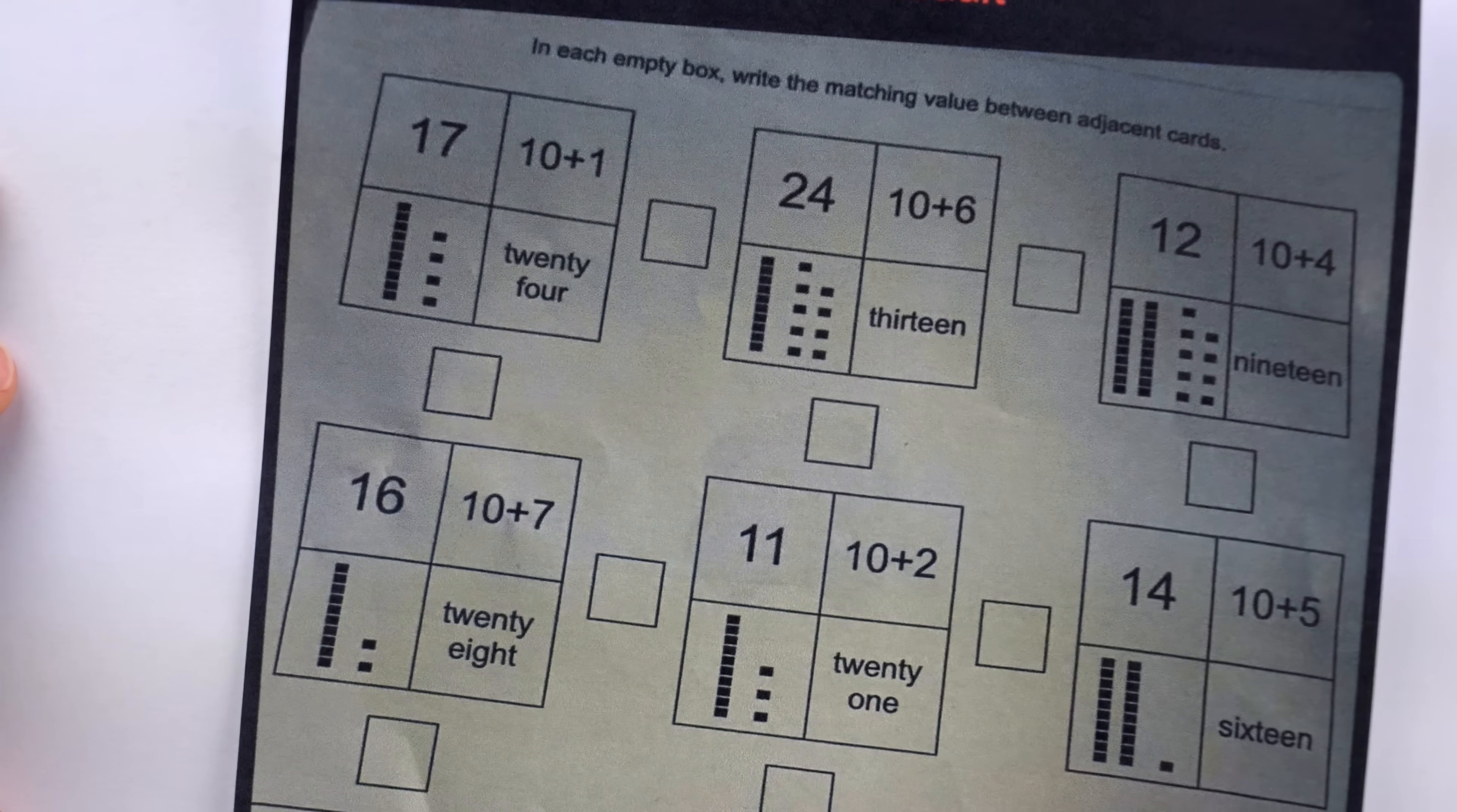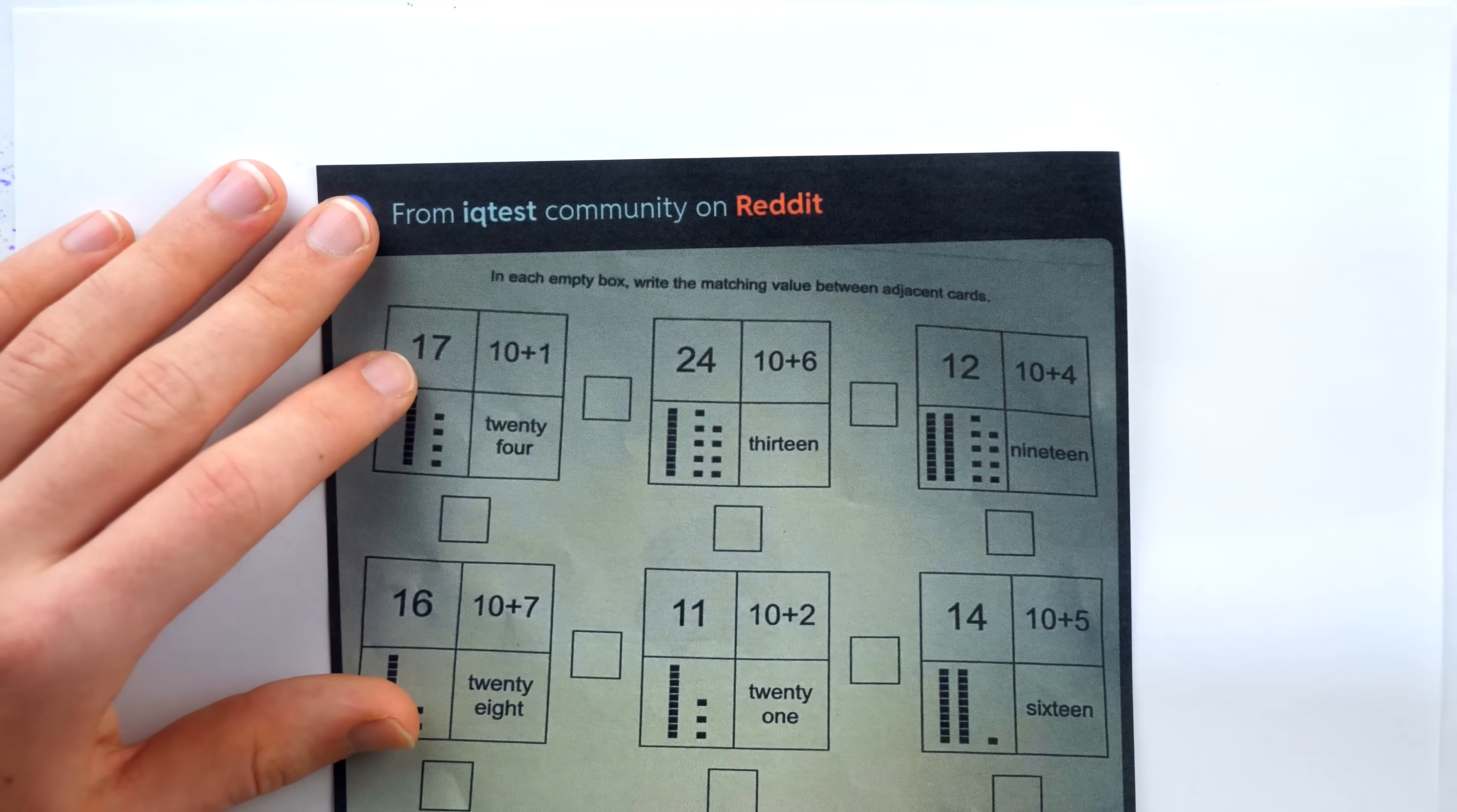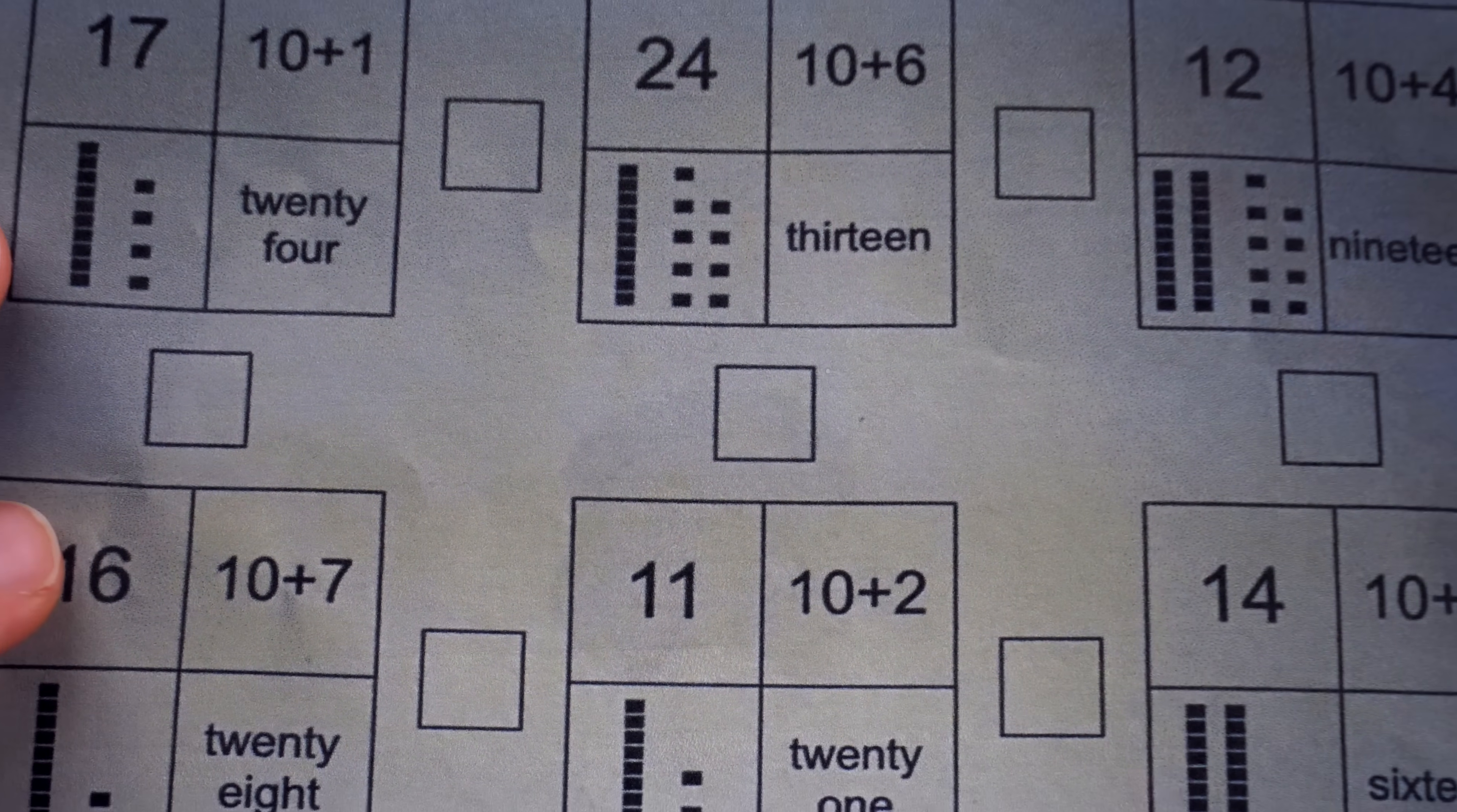Now, the person who posted this homework on Reddit added the caption 'what the heck is this' but with additional vulgarities. So they were not sure what's being asked for here. The instructions are pretty minimal. It just says in each empty box, write the matching value between adjacent cards. I suppose they could have been more clear with the instructions, but I think what you're supposed to do is pretty clear here.